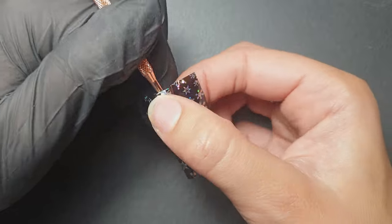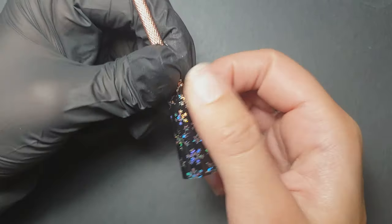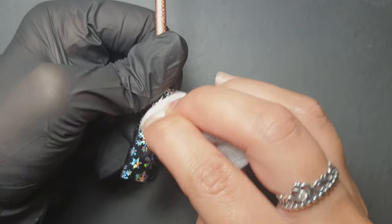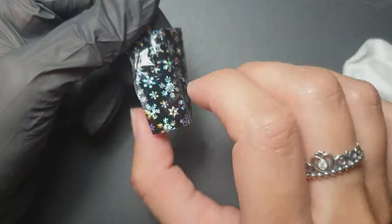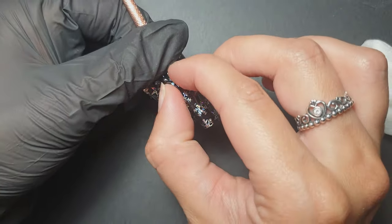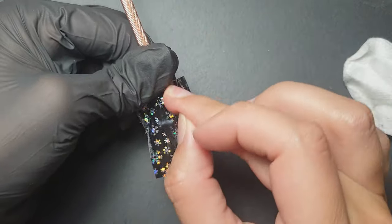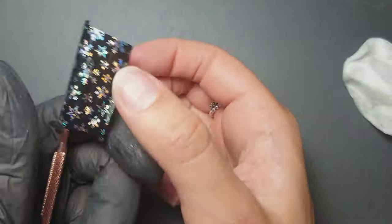This step is a lot easier when you're doing it on yourself or a client. Basically what I'm doing is making sure that's fully adhered all the way around, rubbing any areas where it hasn't stuck down, and then I'm going to pull it off. You will see that the design is there on the tip.